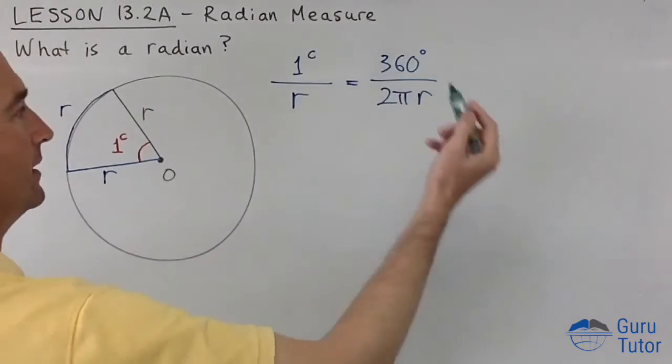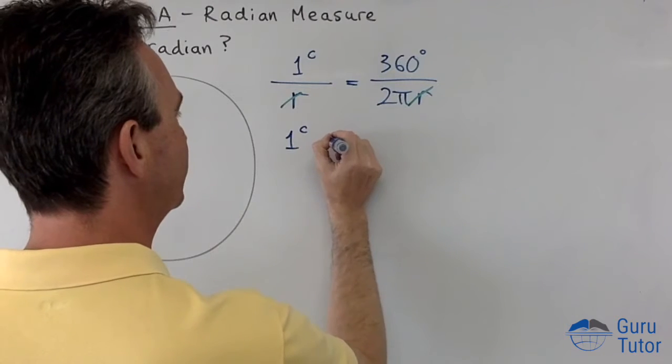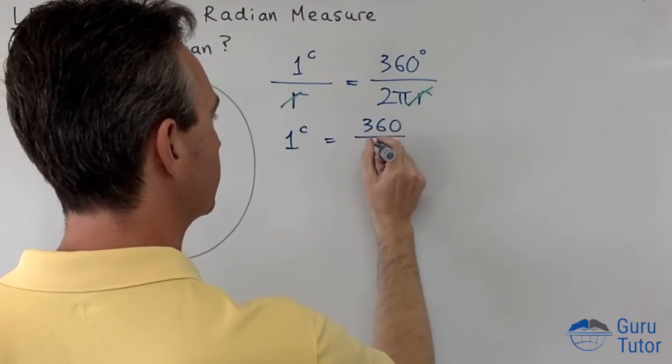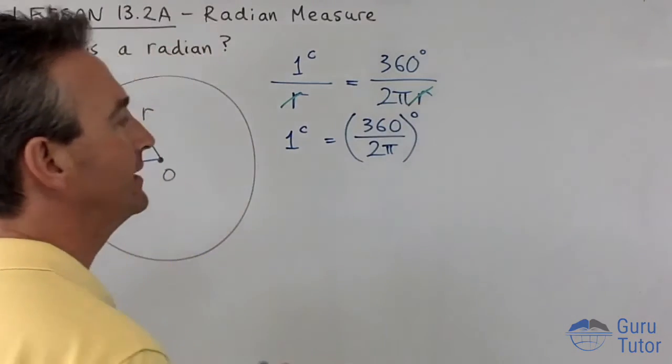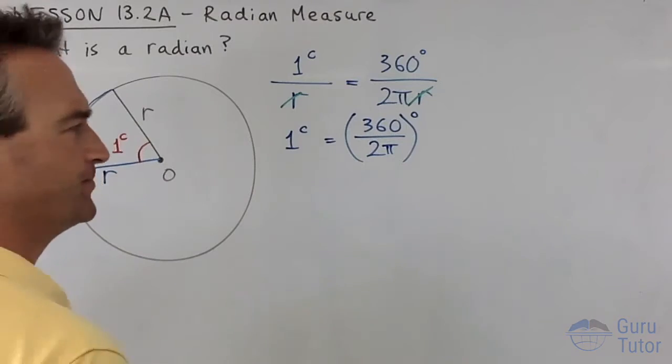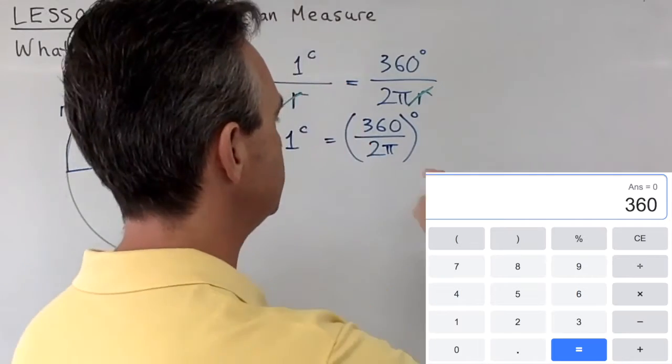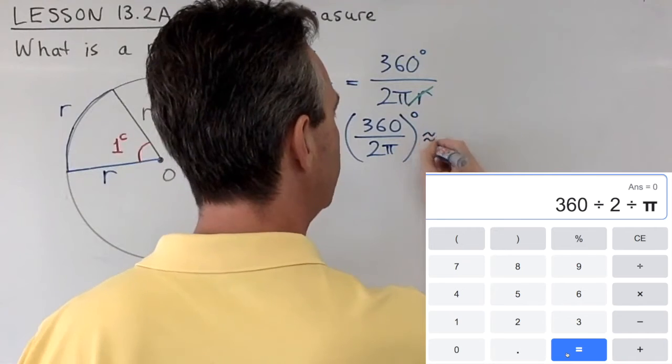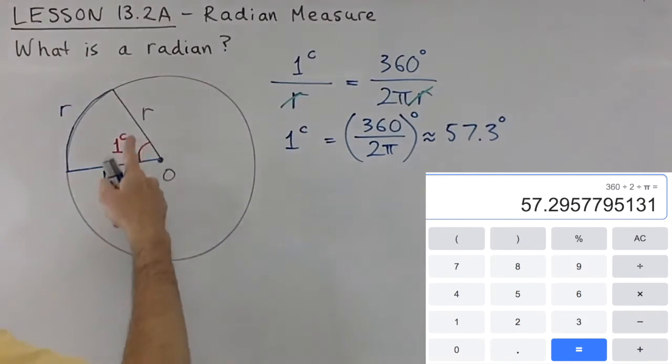Then we just solve this little proportion here. The r's will cancel out and we're left with one radian is 360 degrees divided by 2π, or that could be just one single number there in degrees. What is that? 360 on your calculator, 360 divided by 2, and then also divide that by π, and you'll end up with, and this is a rounding by the way, 57.3 degrees. So it's close to 60 degrees, isn't it? So this is 57.3 degrees—that's what one radian is.